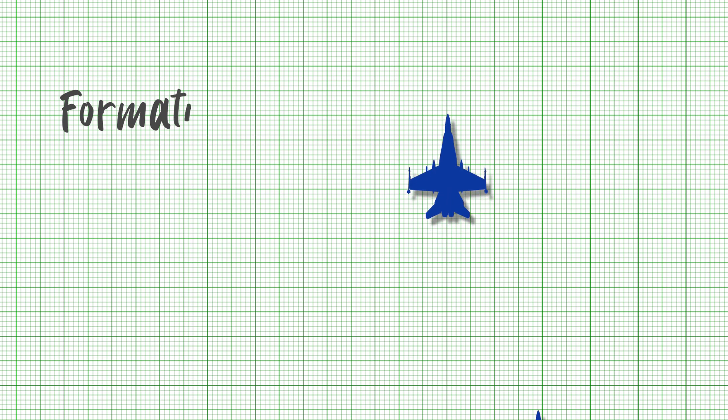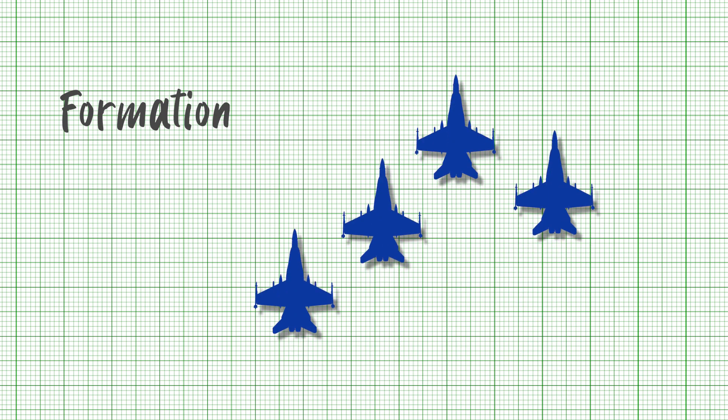Formation. A formation is multiple aircraft operating together as a unit. Each aircraft is given a position number which is described as a dash — for example, dash one, two, etc.